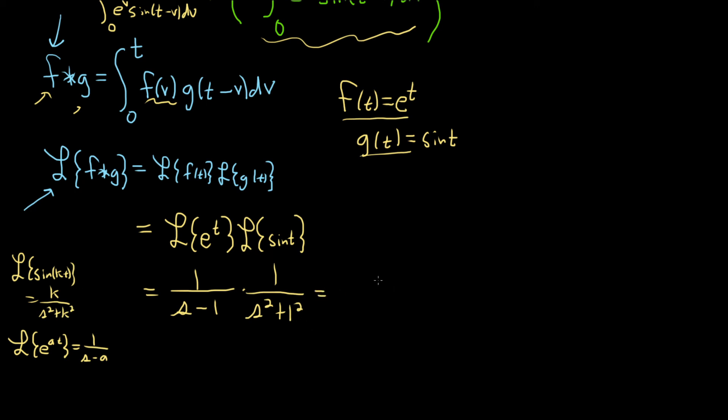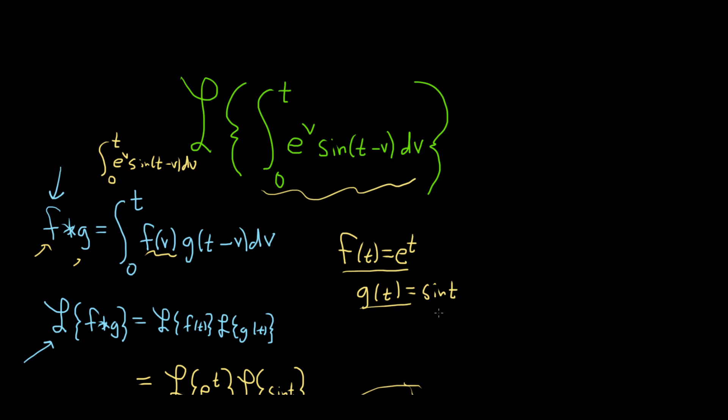And that's pretty much it. If you want, I suppose you could combine these. This is 1 over parentheses s minus 1, s squared plus 1. And that would be the Laplace transform of this integral, which is really the Laplace of a convolution. It's the convolution of f and g, where f is e to the t and g is sine t.